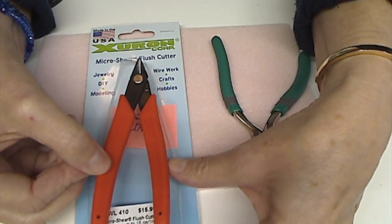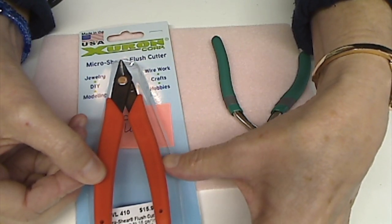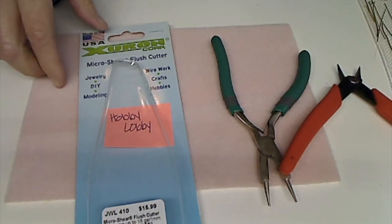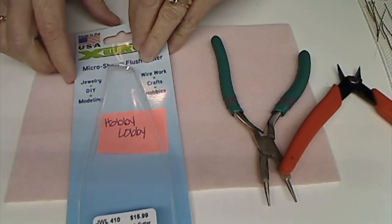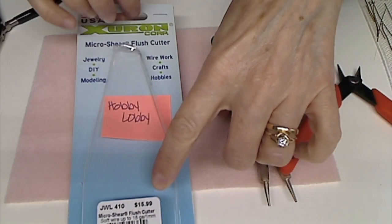If it kind of looks red, it's not. It's really an orange handle. And again, I'll put photos on there or on my website.